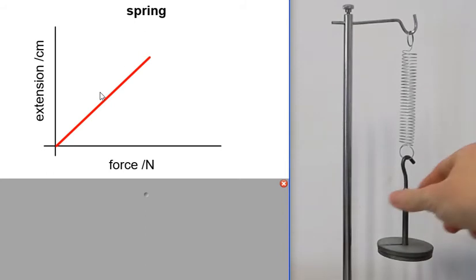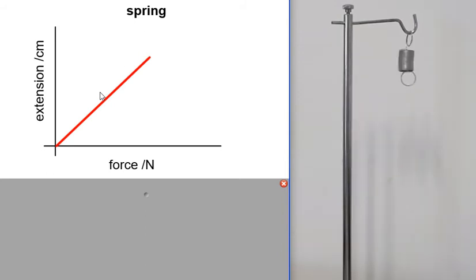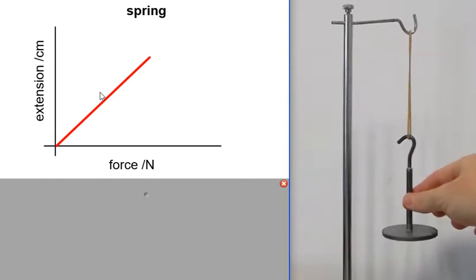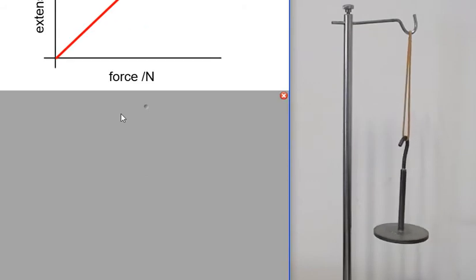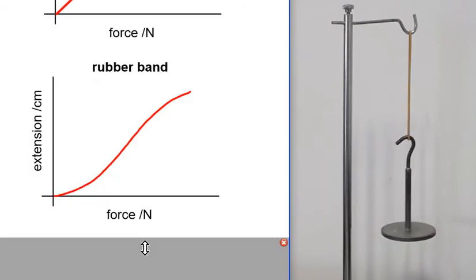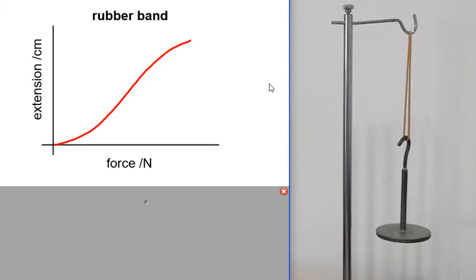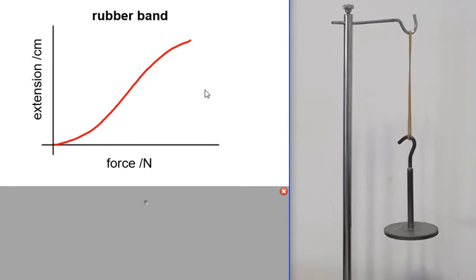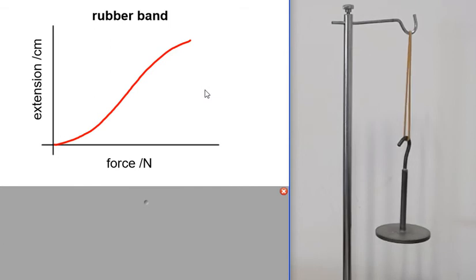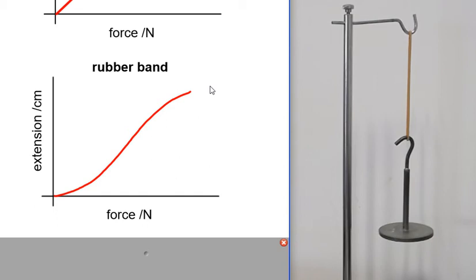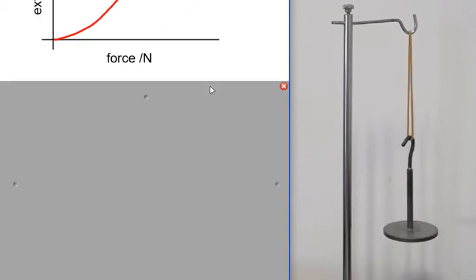But that might not be the result you get if you replace the spring with a rubber band and do the same experiment. Typically the graph for a rubber band is not a straight line through the origin — it's usually a curve, and it can be complicated depending on the rubber you're using. So for a spring you usually get a straight line; for a rubber band you usually won't.